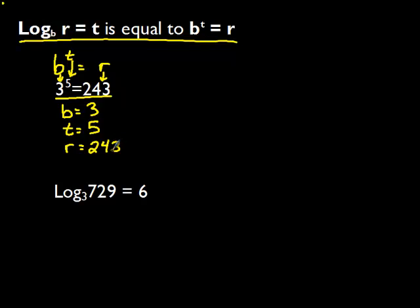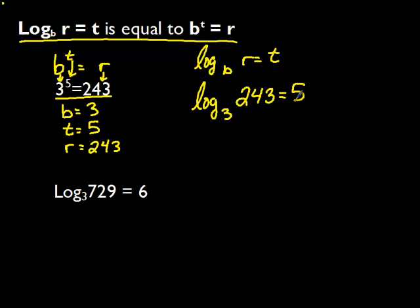We use b, t, and r. We can convert these into a logarithm by using the fact that log base b of r equals t. We have log base 3 of 243 equals 5. So we have an exponent of 3 to the fifth power equals 243. This is the same as log base 3 of 243 equals 5. They're equivalent, they're the same thing.